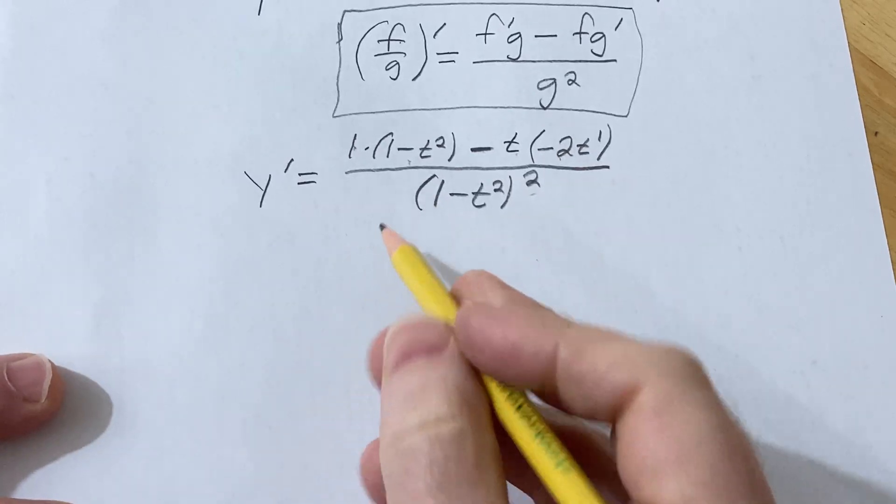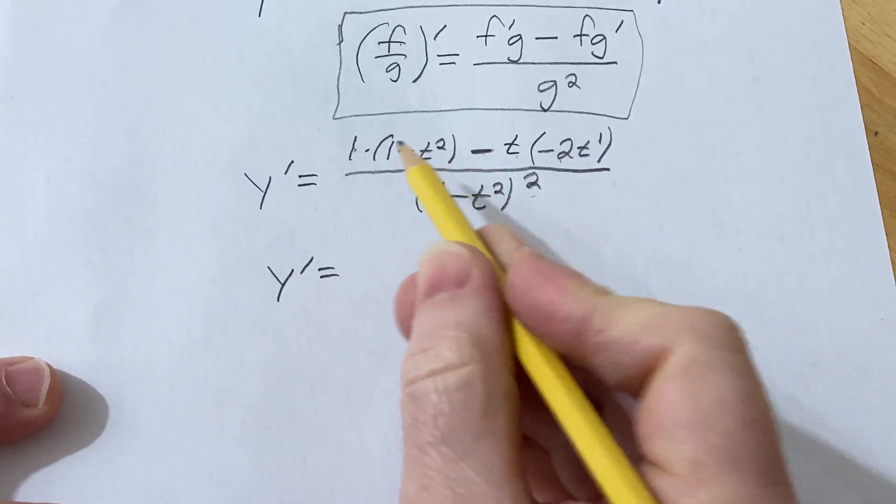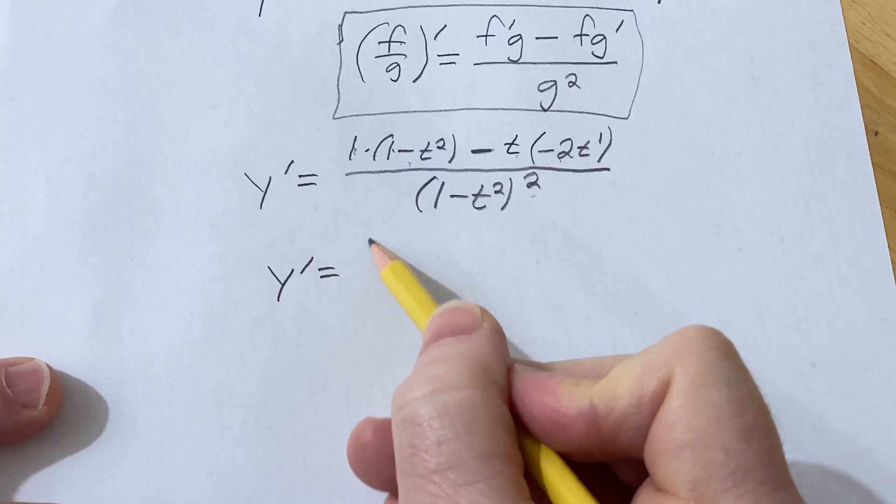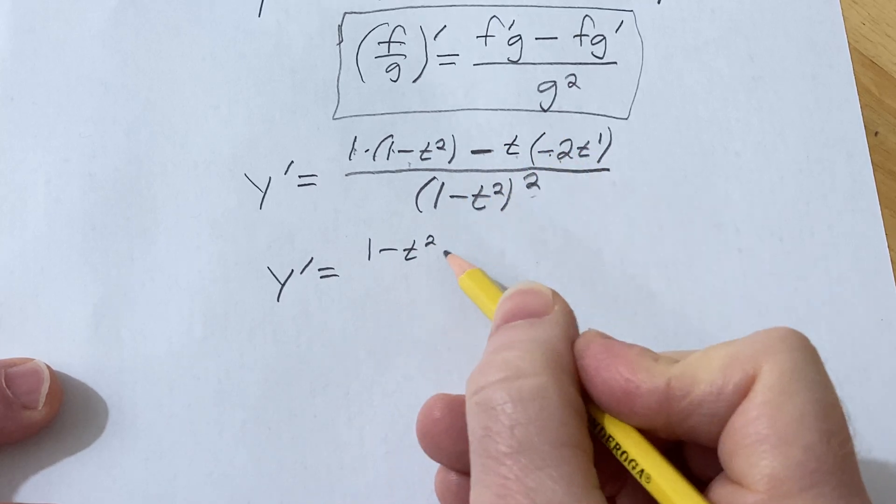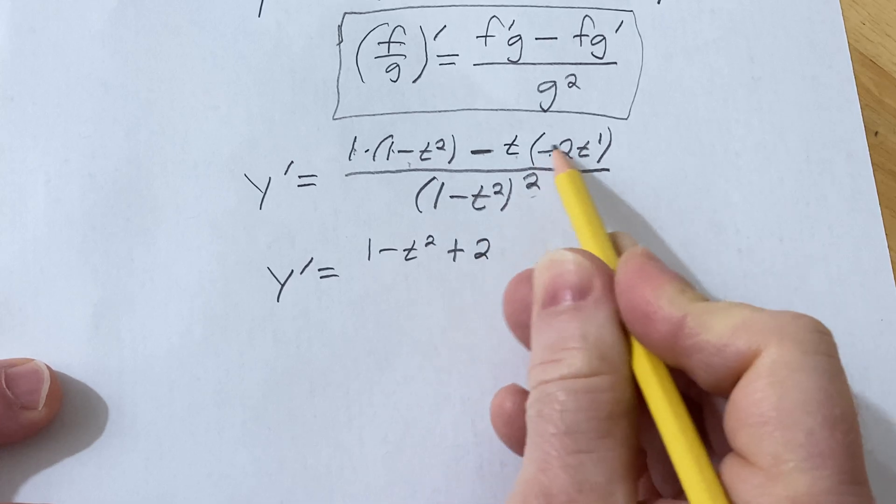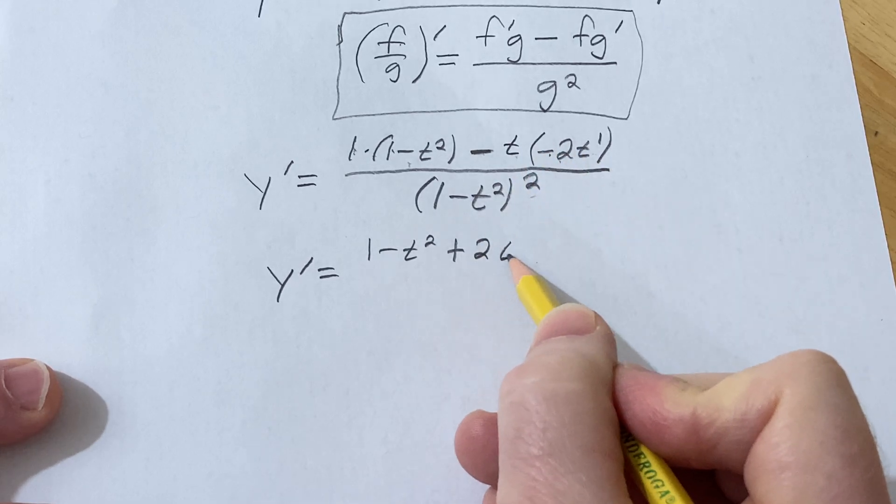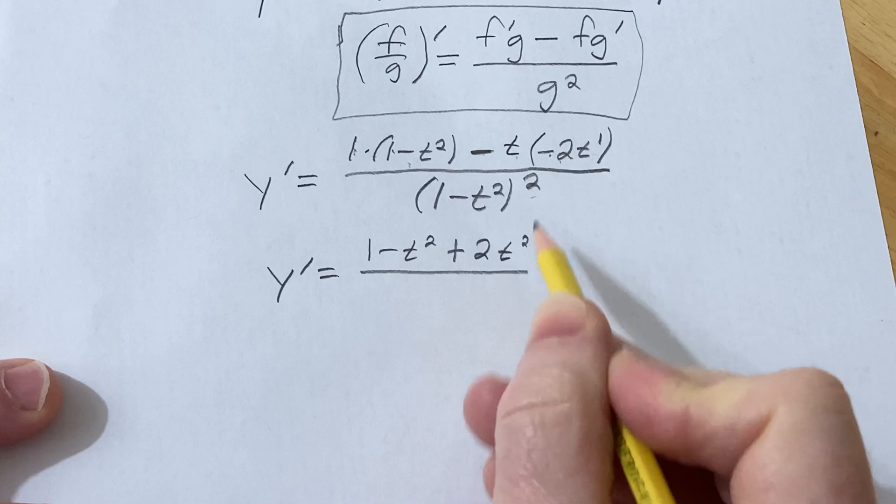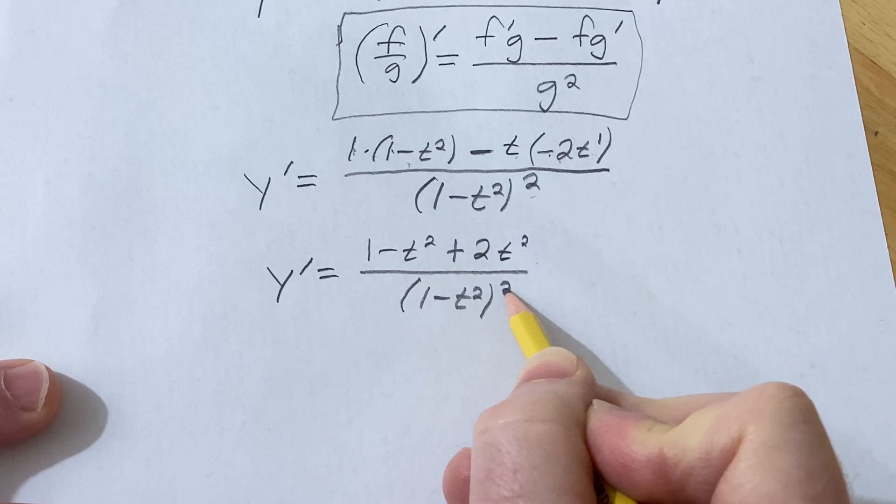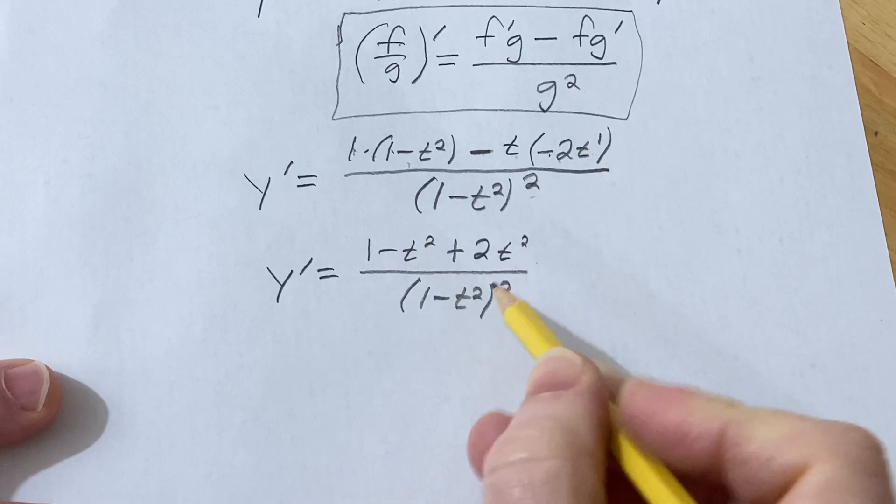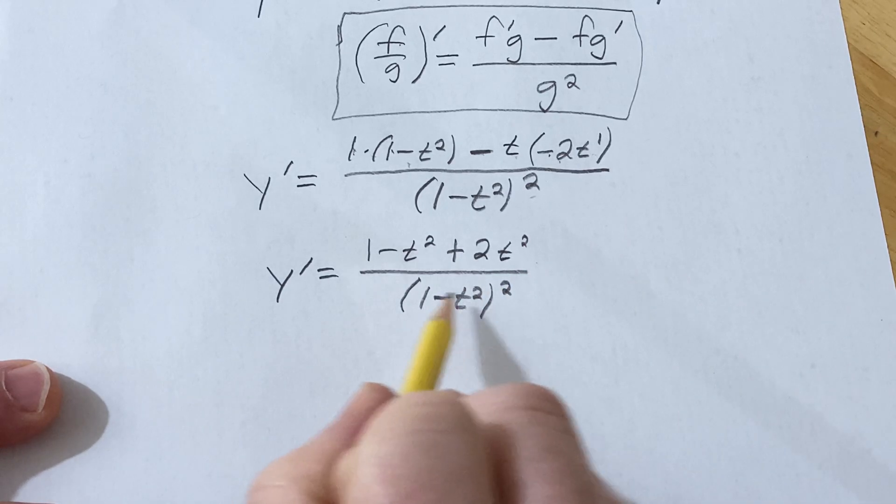Now let's go ahead and try to clean this up. So y prime is equal to—so 1 times this is just that. Here we have a minus and a minus, so it's going to become a plus. So plus 2t squared, because t times t is t squared. Over, and then down here on the bottom, you generally want to leave this like this. You don't want to multiply it out for various reasons. It's just easier to leave it in this nice form.